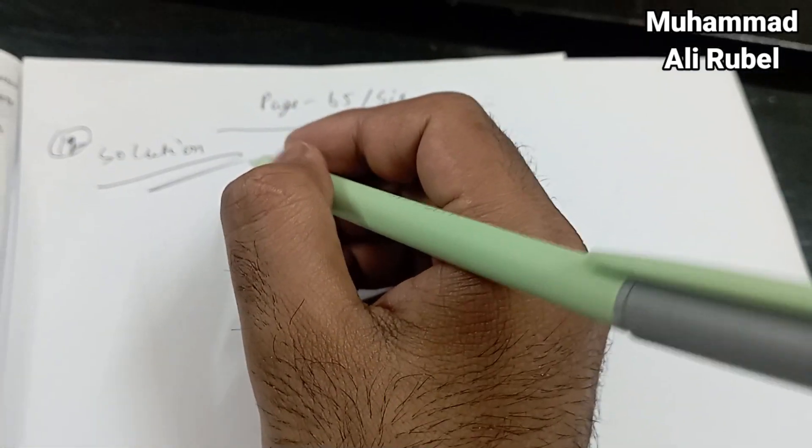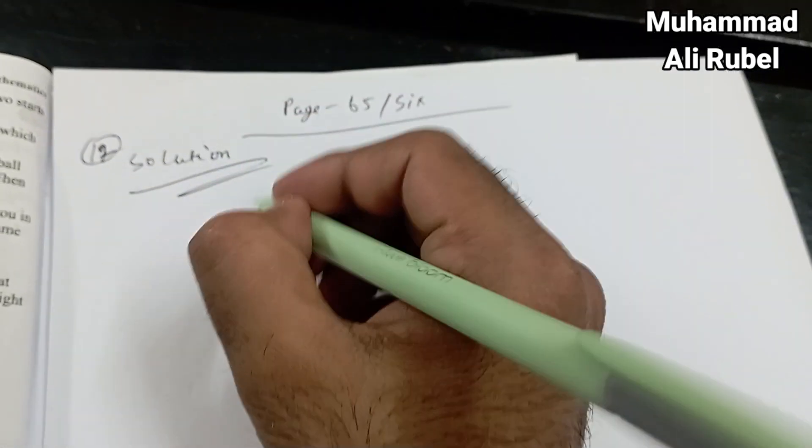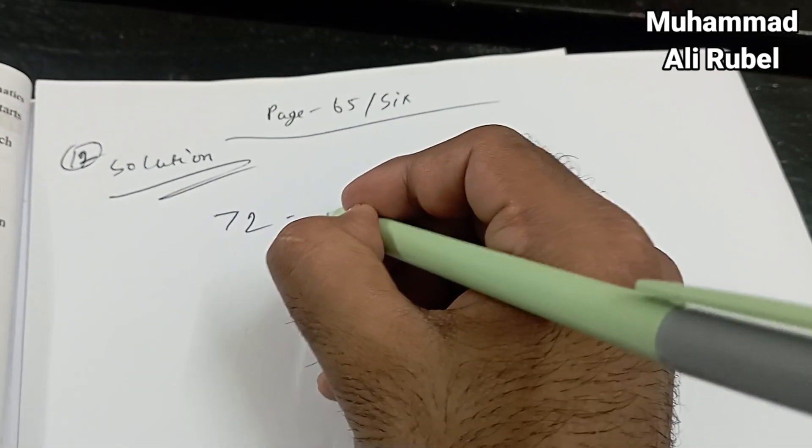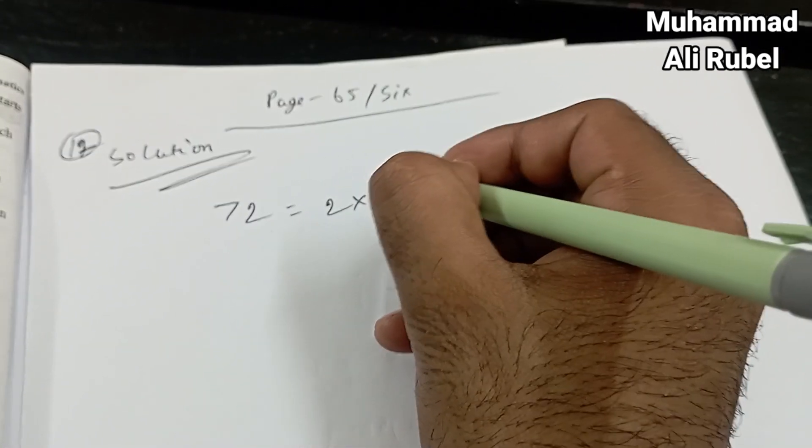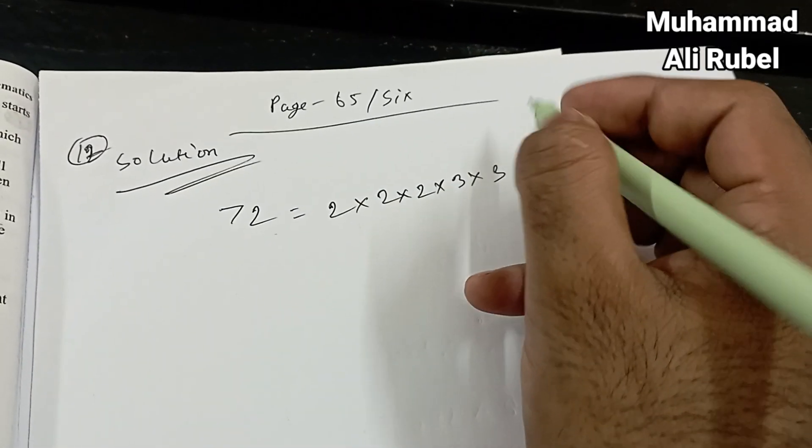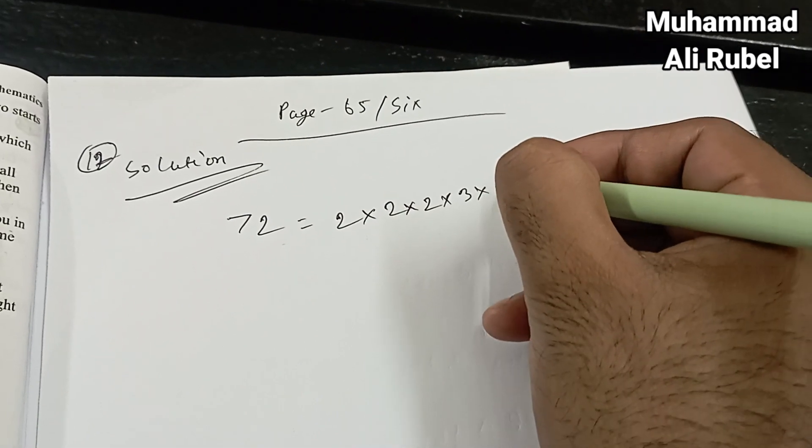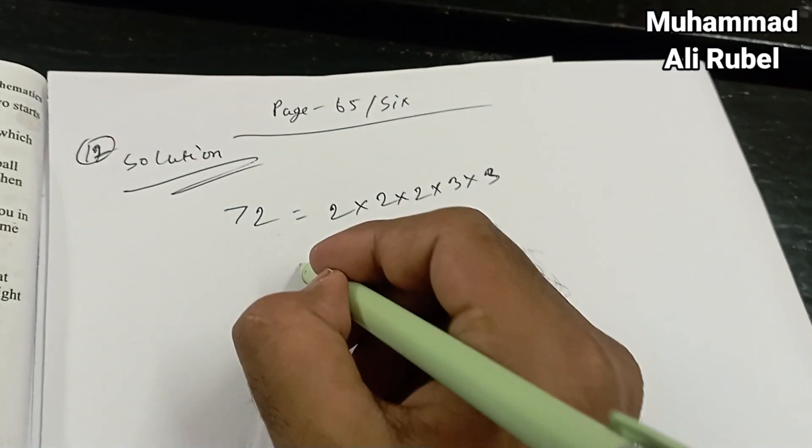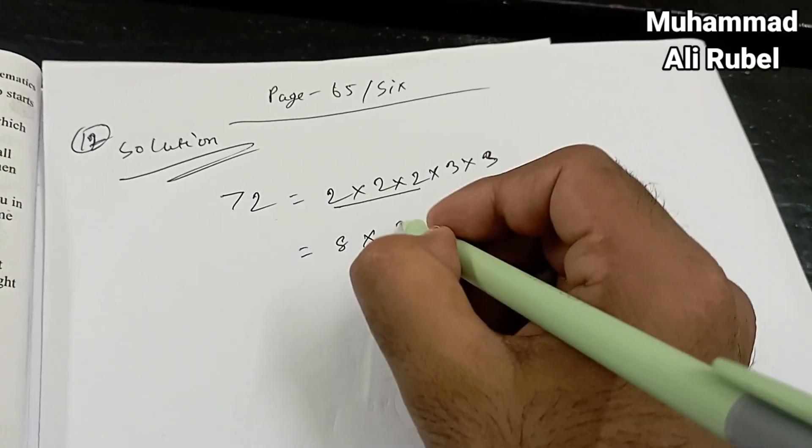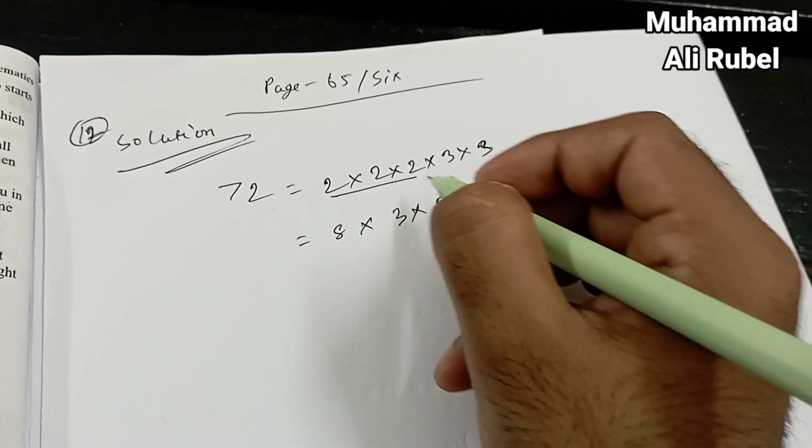Number 12 solution: 72 equals 2 into 2 into 2 into 3 into 3. Here 8 and 3 into 3.